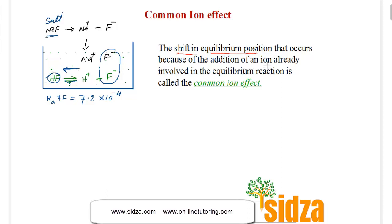The shift in equilibrium position that occurs because of the addition of an ion already involved in the equilibrium is called the common ion effect. Here, the fluoride ion — common to both species — shifts the equilibrium to the left, meaning dissociation decreases. This decrease in dissociation due to the addition of a common ion is the common ion effect.